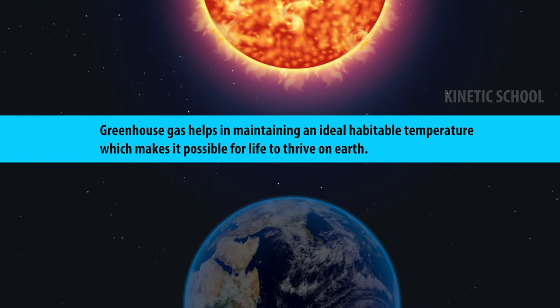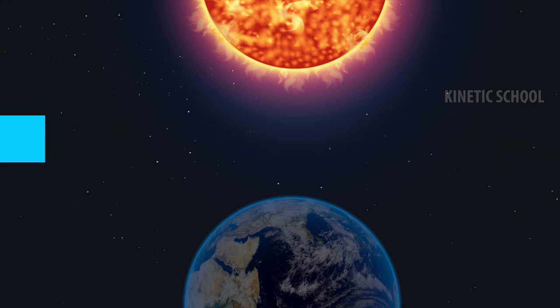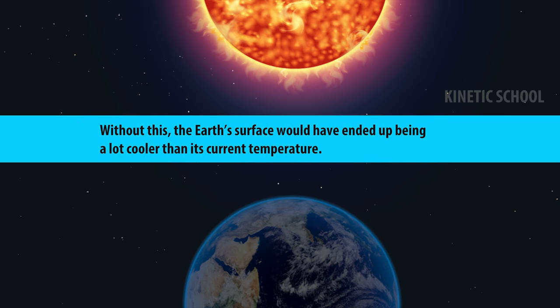Greenhouse gases help in maintaining an ideal habitable temperature, which makes it possible for life to thrive on earth. Without this, the earth's surface would have ended up being a lot cooler than its current temperature.